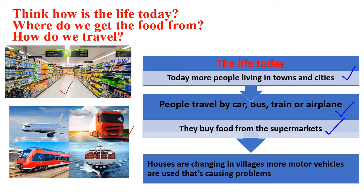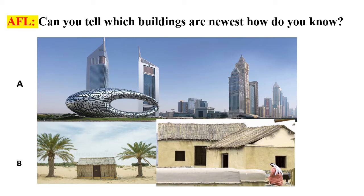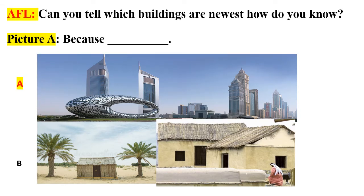That is causing problems. AFL: can you tell which buildings are newest and how do you know? Check picture A and picture B and choose the right answer. The correct answer is picture A. Picture A has new buildings because the houses in picture B are made of mud and stones and they are very small.